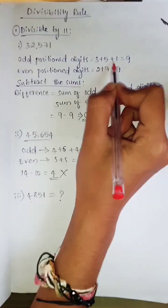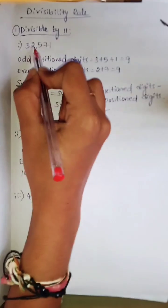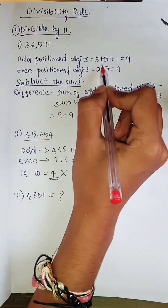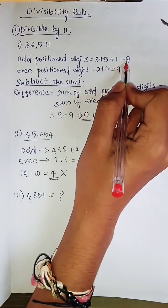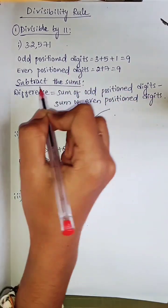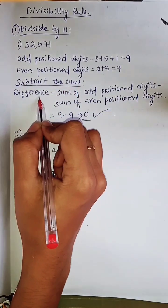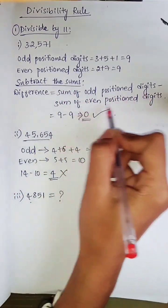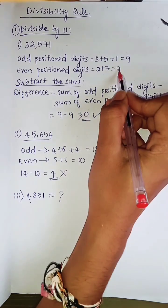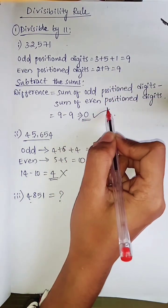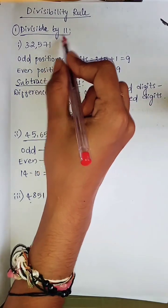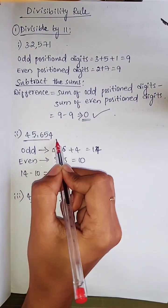Even position digits are 2 and 7. We have to add those numbers. We will get 9 for both and subtract the sums. Sum of odd position digits minus sum of even position digits will get 0. If we get 0, then the number is divisible by 11. Let's see one more example.